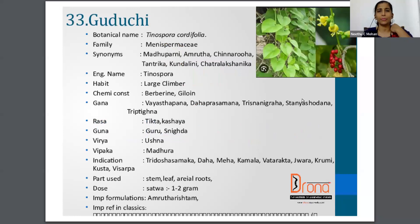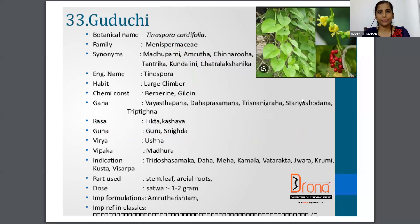The botanical name of Guduchi is Tinospora Cordifolia and the family is Menispermaceae. Synonyms are Madhuparni, Amrita, Chinnaruha, Kundalini, etc. The English name is Tinospora itself. The part used is stem, leaf, or aerial roots, and the dosage of the Sattva is 1 to 2 gram.